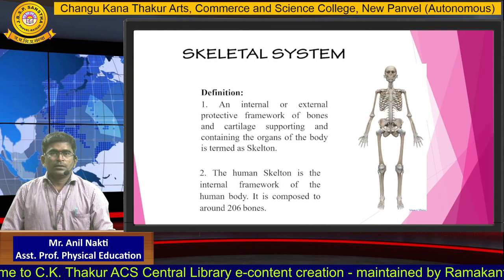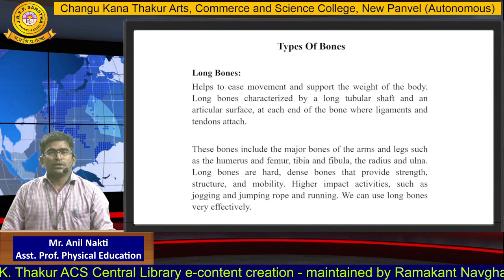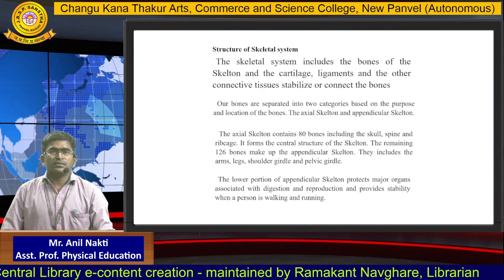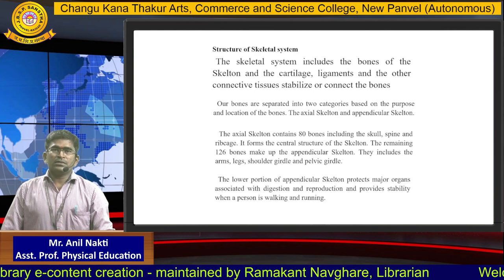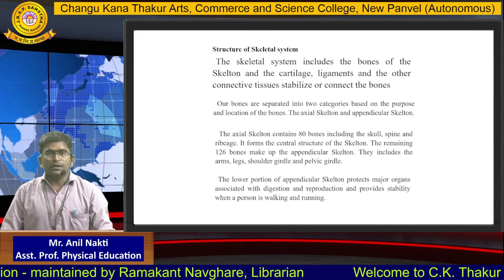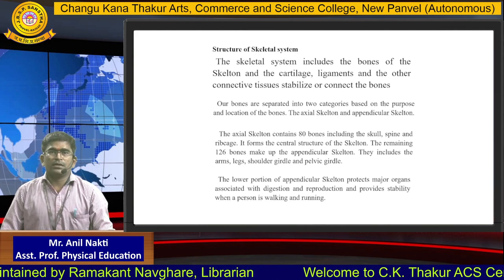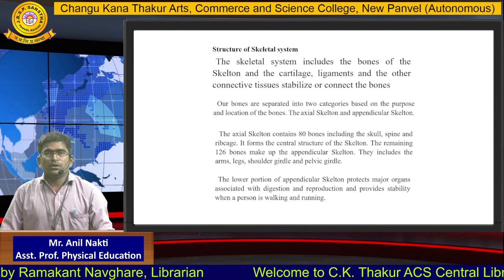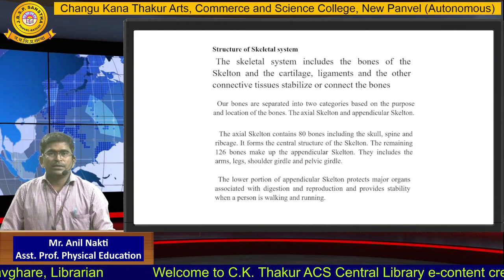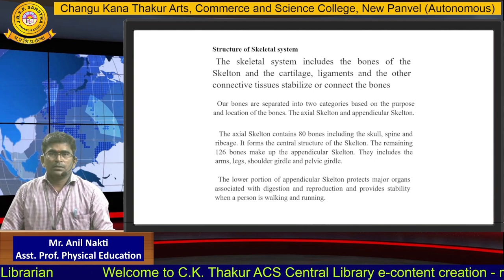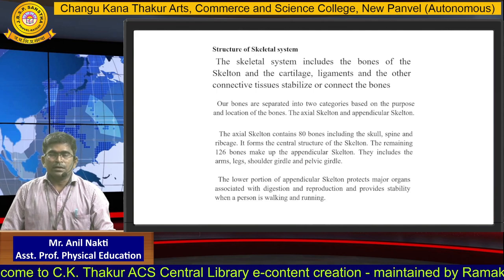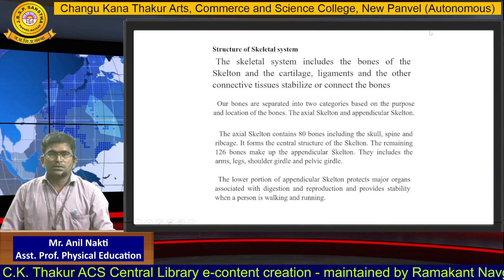Now we will see the structure of the skeletal system. The skeletal system includes the bones of the skeleton and the cartilage, ligaments and other connective tissue that stabilize or connect the bones. Our bones are separated into two categories based on the purpose and location of the bones: the axial skeleton and the appendicular skeleton.